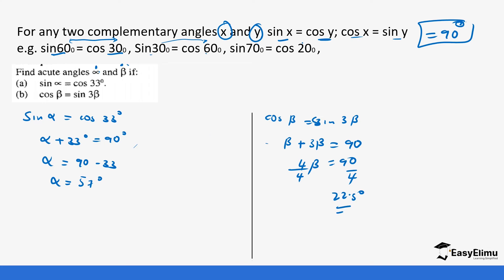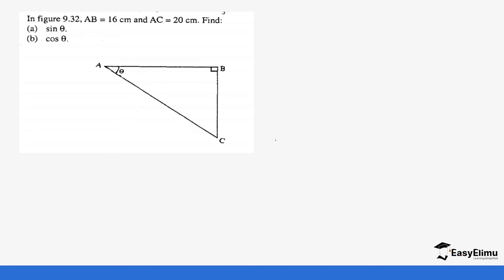Dividing both sides by 4, we get beta equals 22.5 degrees. Next, in the figure below, AB is 16 centimeters and AC is 20 centimeters. We need to find the sine of the angle, and to get this value we need to use the Pythagorean theorem.